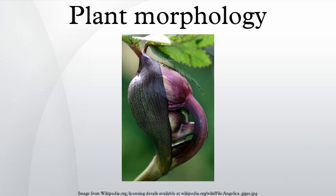Once the embryo germinates from its seed or parent plant, it begins to produce additional organs through the process of organogenesis. New roots grow from root meristems located at the tip of the root, and new stems and leaves grow from shoot meristems located at the tip of the shoot. Branching occurs when small clumps of cells left behind by the meristem, which have not yet undergone cellular differentiation to form a specialized tissue, begin to grow as the tip of a new root or shoot. Growth from any such meristem at the tip of a root or shoot is termed primary growth and results in the lengthening of that root or shoot. Secondary growth results in widening of a root or shoot from divisions of cells in a cambium.